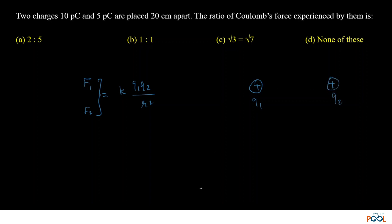The force exerted by Q1 on Q2 which is taken as F1, force exerted by Q2 on Q1 which is F2. These two forces will always be in the ratio 1 is to 1.